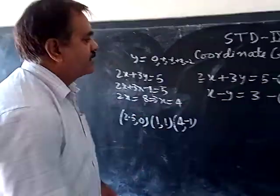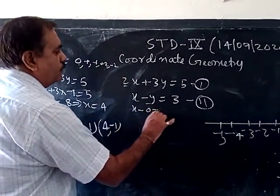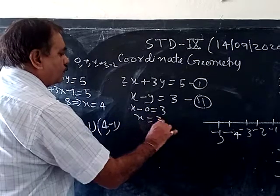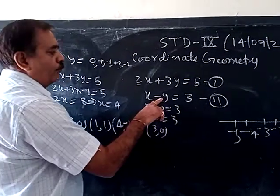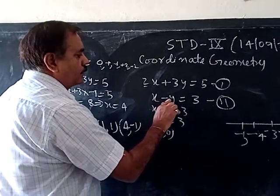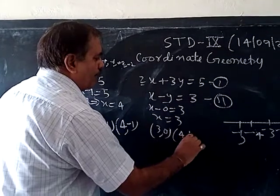Similarly, for this second equation, x minus y is equal to 3. When we take y equals 0, x is equal to 3. So one coordinate is (3, 0). When y is equal to 1, x value will become 4, so (4, 1).